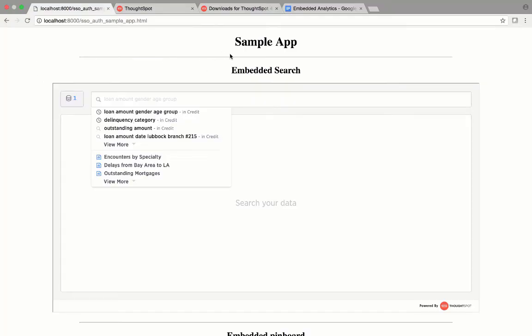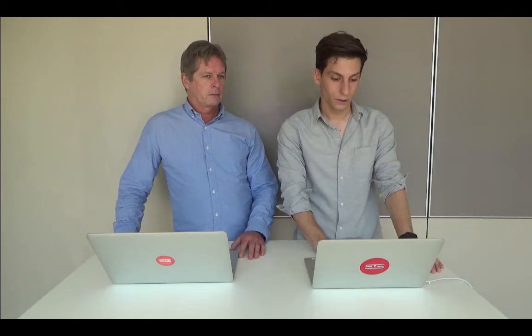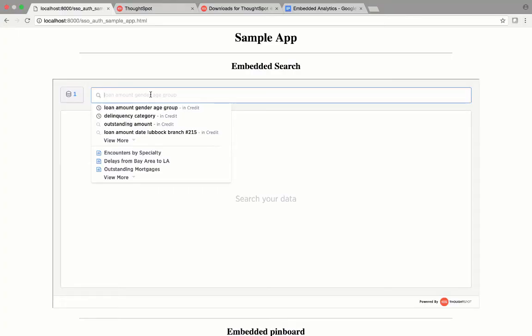So, here we have a sample application. The first visualization you see here is just a simple embed of our search bar. So, from here, you'll notice that it's basically just the search web page minus the top navigation bar, that laptop navigation bar. So, from here, you can do anything.